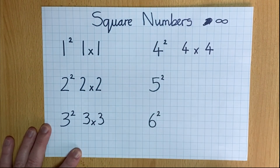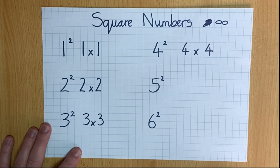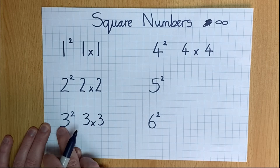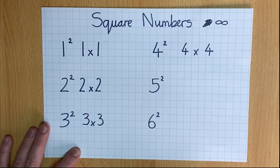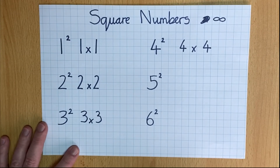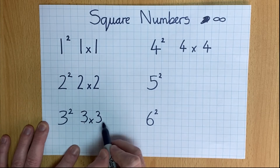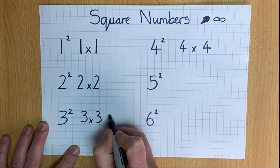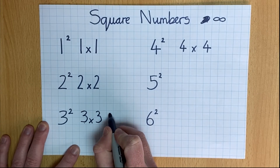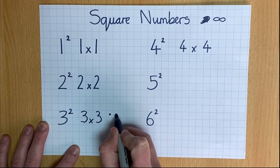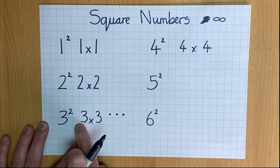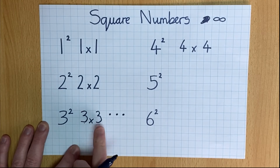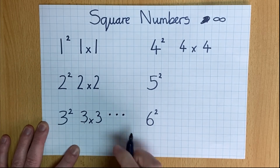So, why are they called square numbers? If I start with three squared, that would probably be the best way to start this example. Three times three — if you imagine I get three dots and I make three rows of them.